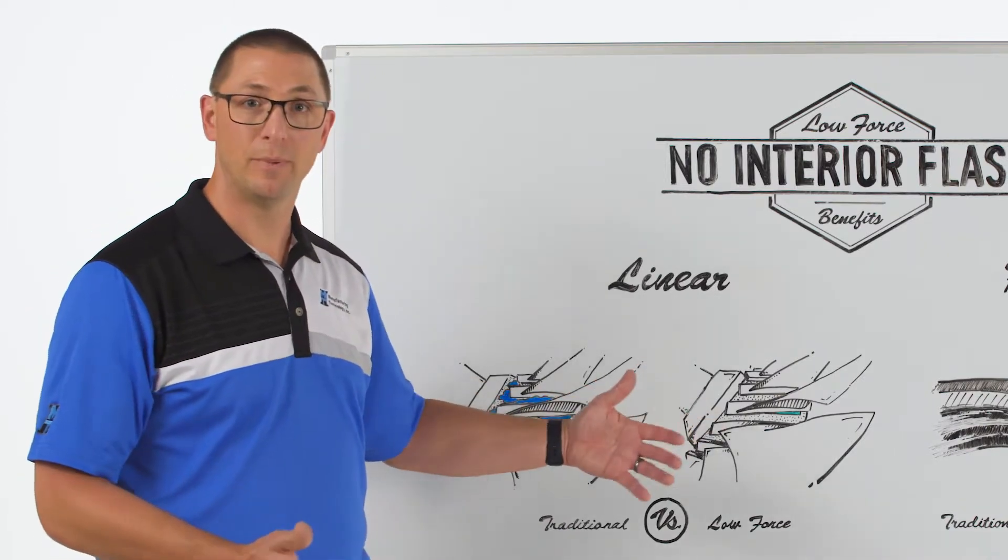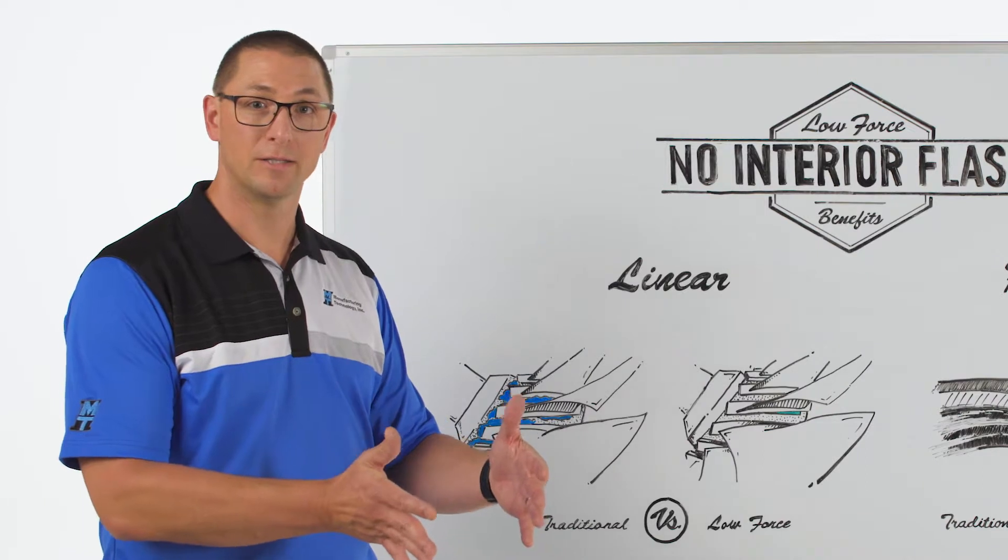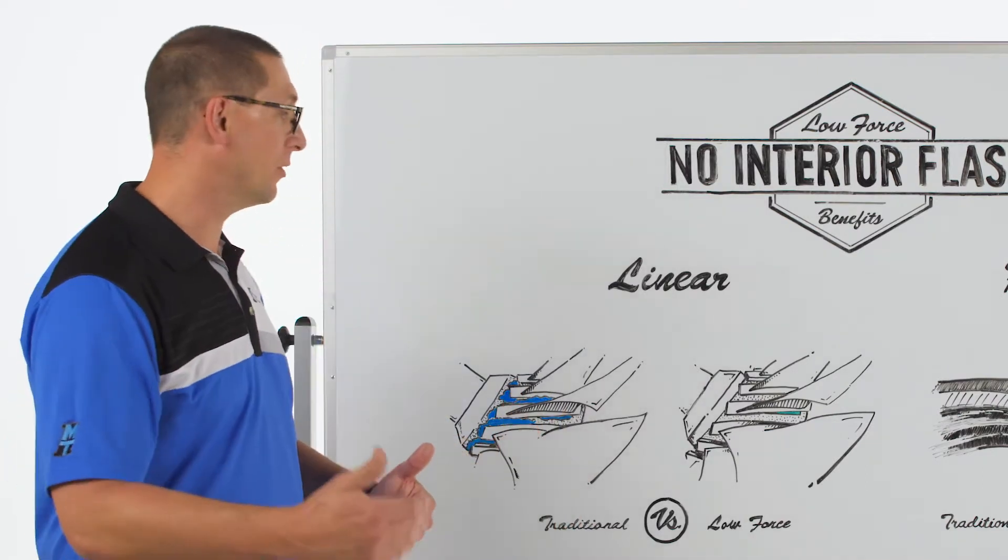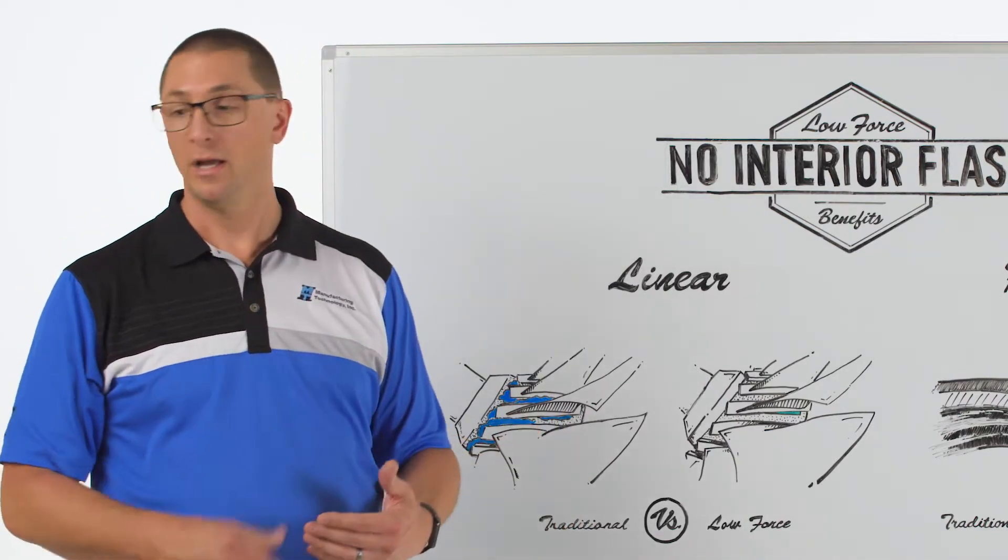It makes it much easier to machine afterwards. It doesn't impinge on the blade spacing. I can get more blades in a tighter space if I want to, so there are more applications within the compressor that I can weld.